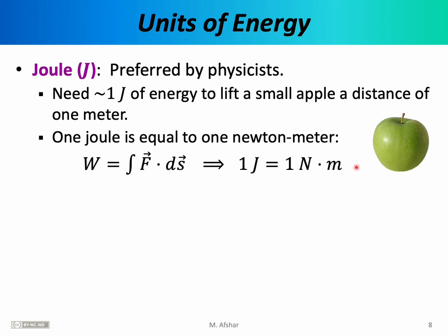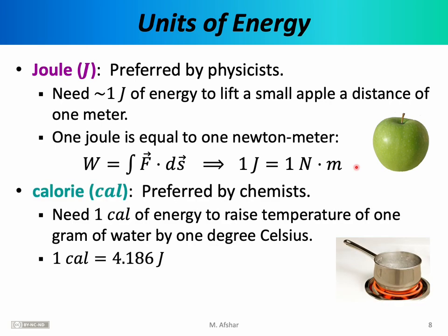Energy is used by many different people in many disciplines, so there are many other units of energy we need to be familiar with. Another common unit is the calorie, mostly preferred by chemists. One calorie is defined as the energy required to raise the temperature of one gram of water by one degree Celsius. One calorie is equal to 4.186 joules — you don't need to memorize this, but given this number, you should be able to convert between joules and calories.